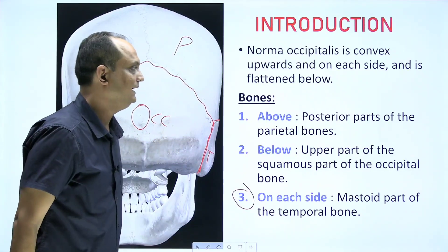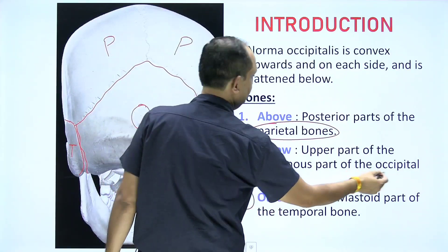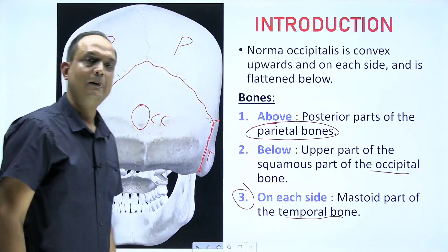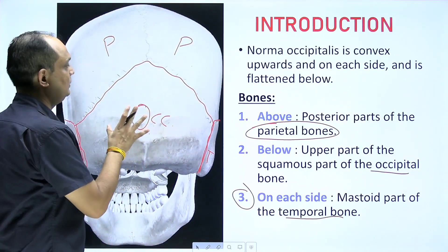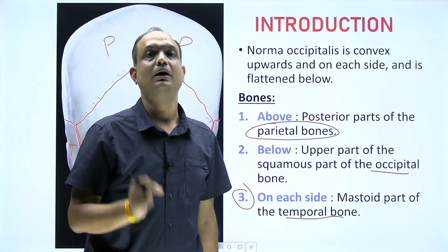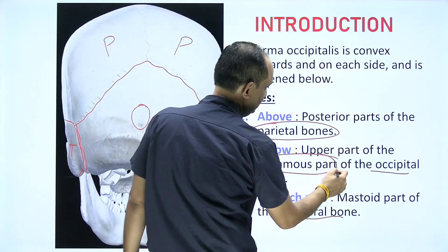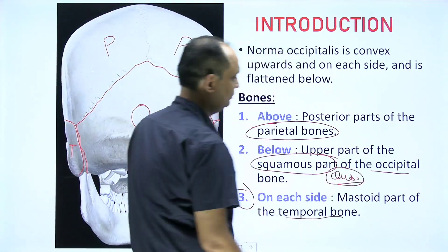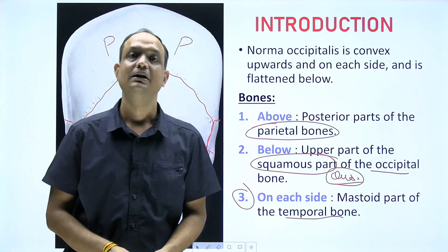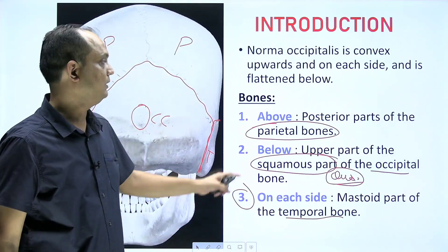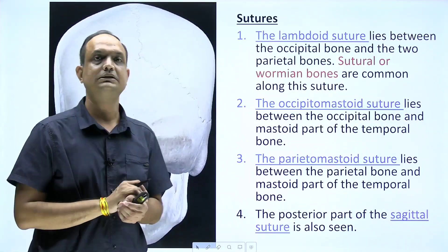When reading norma occipitalis, keep in mind you are dealing with the parietal bones, the occipital bone, and the temporal bone. A commonly asked exam question is: which part of the occipital bone is visible in norma occipitalis? The answer is the squamous part. Most students fail to attempt this — in norma occipitalis we are dealing with the squamous part of the occipital bone.